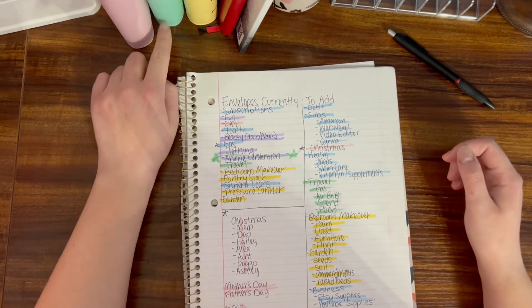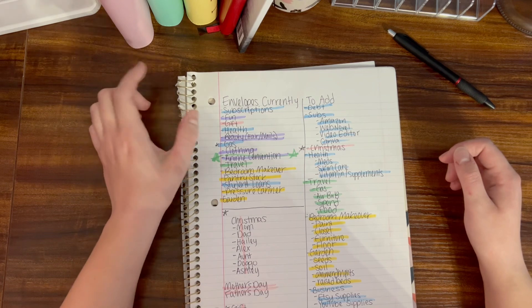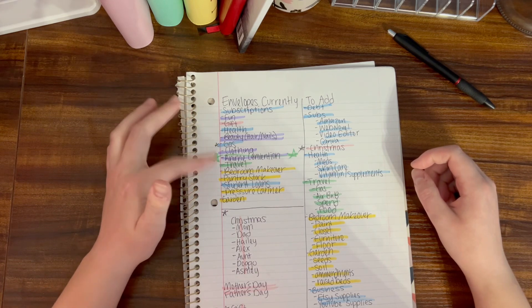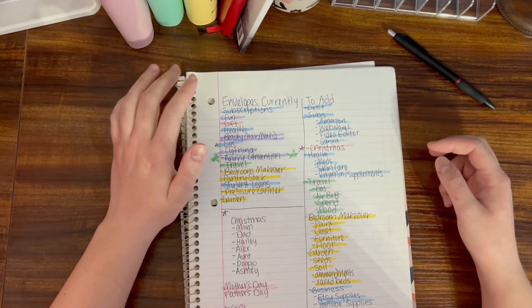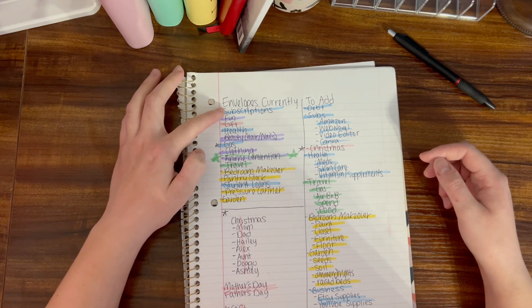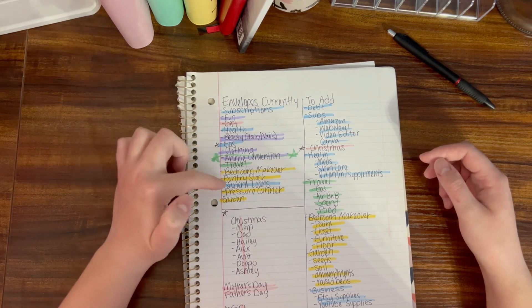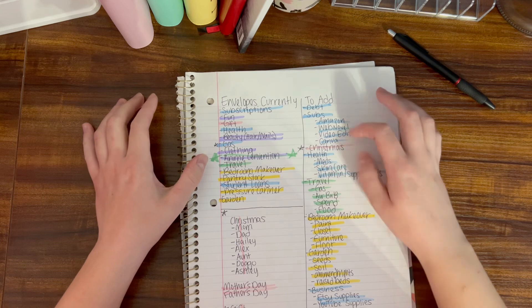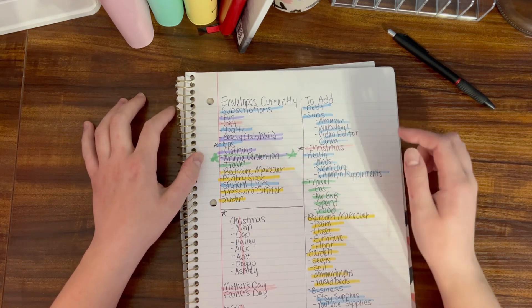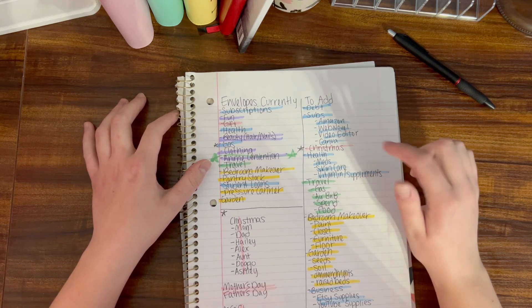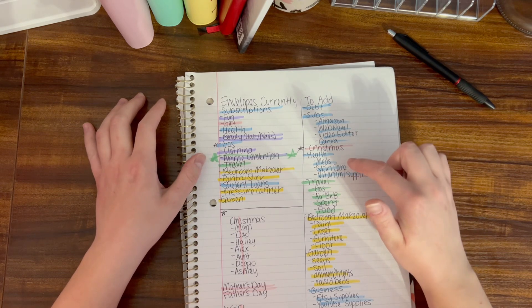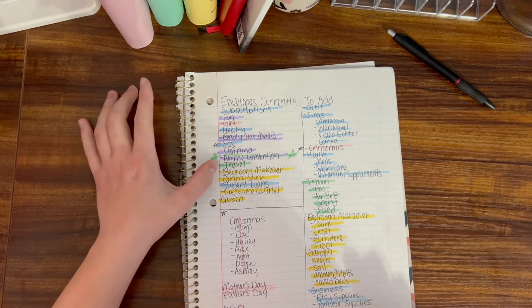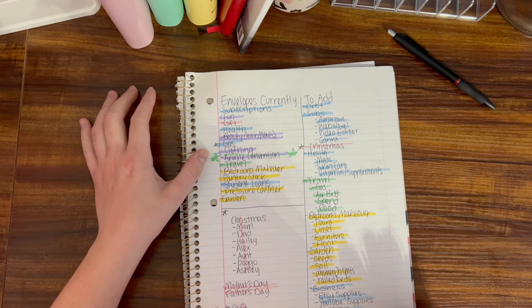The blue binder or greenish aquamarine color will have my bills. I'll have subscription, gas, my sinking funds for subscriptions, health, student loans, debt, yearly subscriptions because it'll save a little bit of money. Health will be divided into meds, skin care, vitamins and supplements. I'll have business in there as well, so Etsy supplies, YouTube supplies, and giveaways.